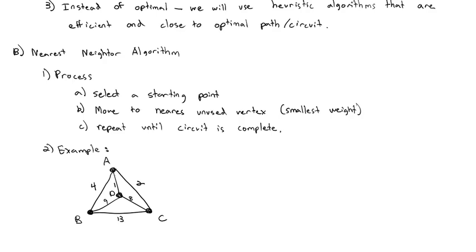Now we need to pick a starting point. It doesn't matter which starting point we pick according to the nearest neighbor algorithm. We just select one. So let's start at A. From A, the nearest neighbor, the smallest weight is to go down to point D. So the nearest is D with only a weight of 1.